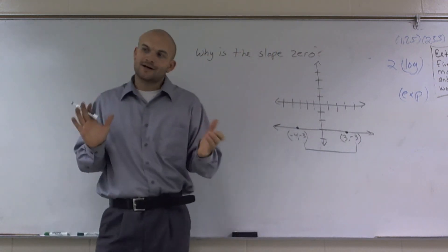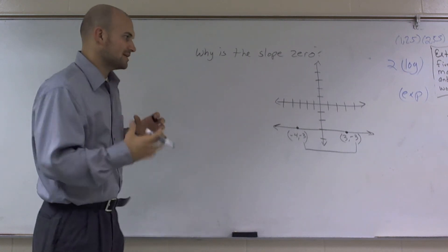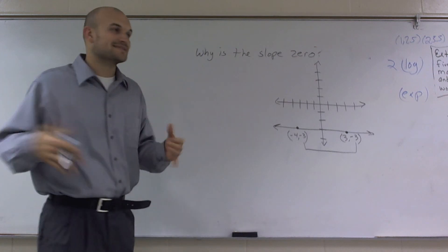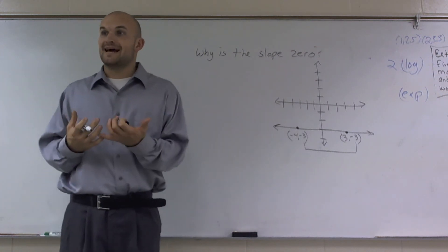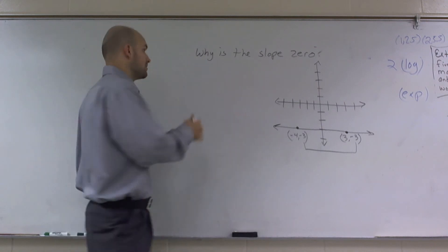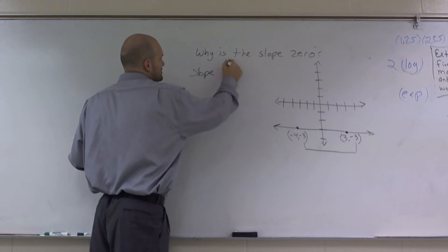So whenever you see the y-coordinates are the same, something very interesting is going to happen. So let's remind ourselves what slope means. Slope is the change in the y over the change in the x, right? So sometimes we say slope is delta y, which is change, over delta x.